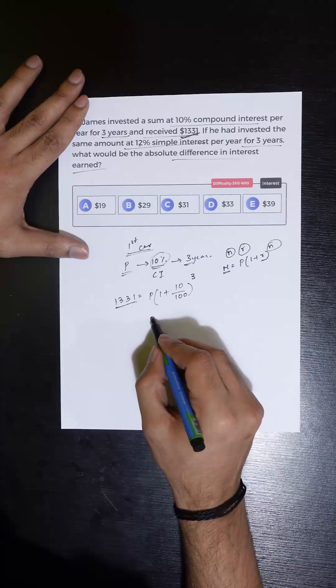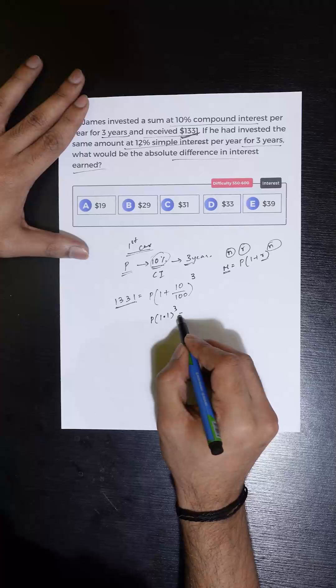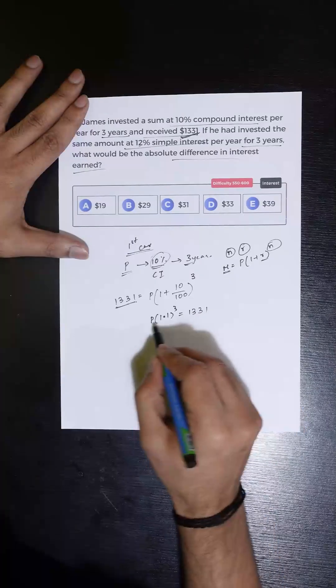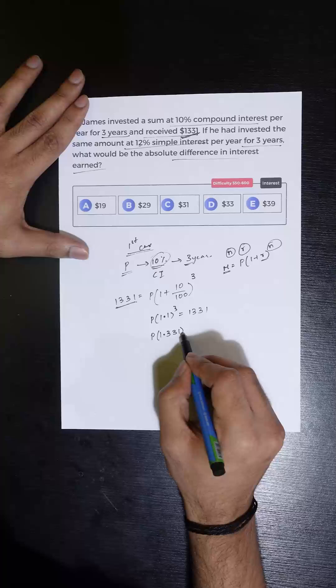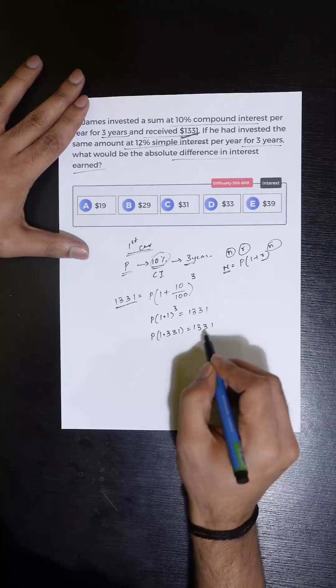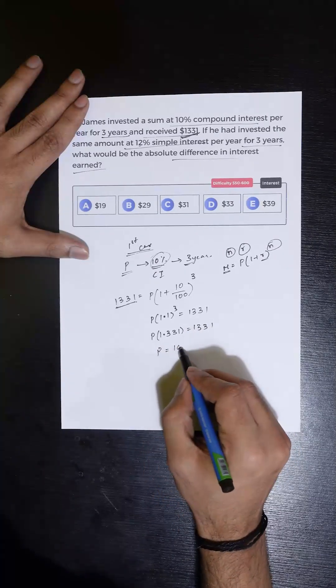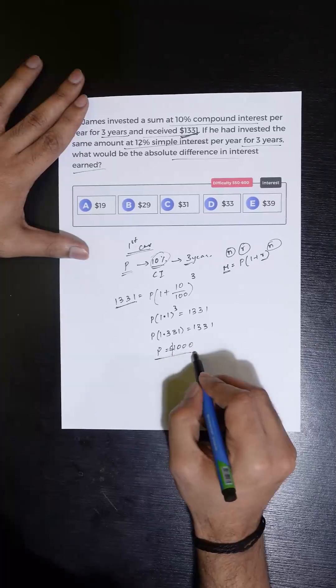P times 1.1 cubed equals 1331, and 1.1 cubed is 1.331. So the value of P is 1000 dollars.